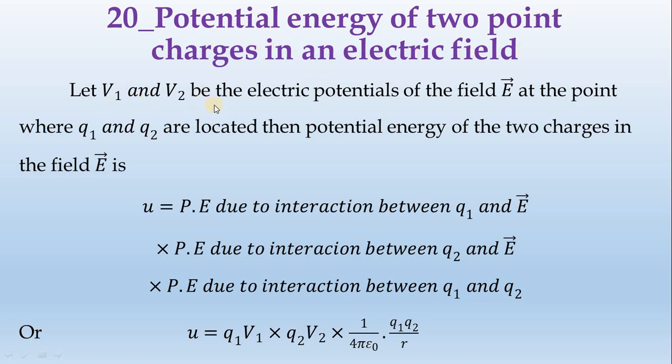Let V1 and V2 be the electric potentials of electric field E at a point where Q1 and Q2 are located, then the potential energy of two point charges in the electric field E is: